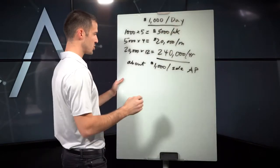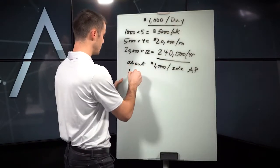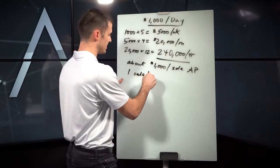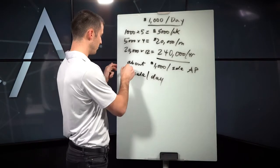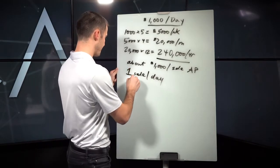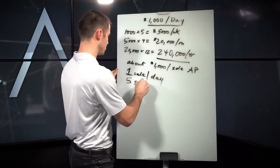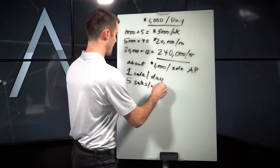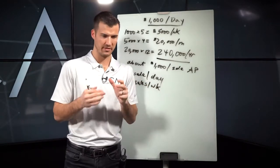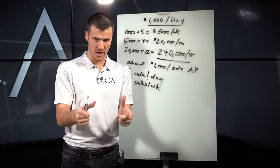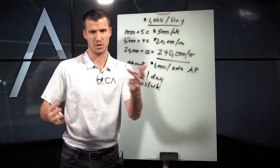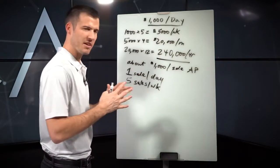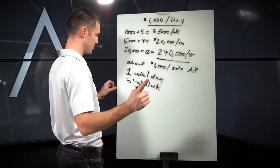At a thousand bucks a day, you need, in that case, you would need one sell per day just to keep it simple. Now let's call that five sells per week. I'm someone that believes in taking everything by the week and then being consistent week in and week out for 50 weeks, taking two weeks vacation. So I think about everything in a week. Five sells a week.